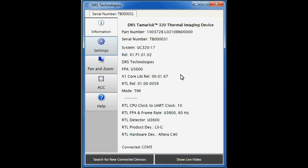The software has discovered the camera. This is the information page where you'll find the camera's serial number, the part number, the system, and other important specifications. Click the settings tab.